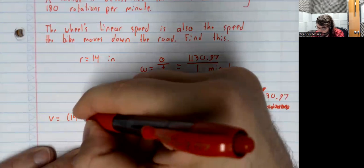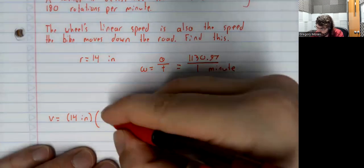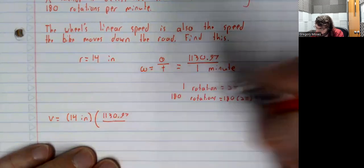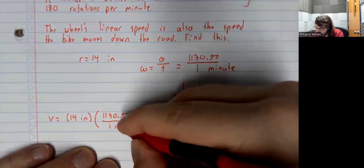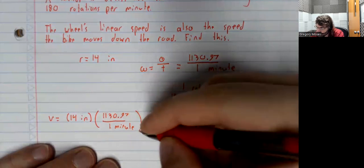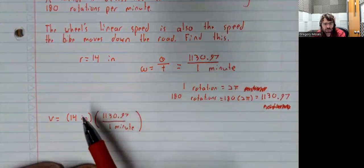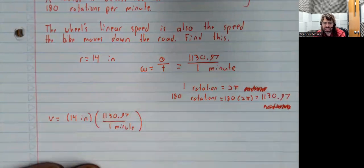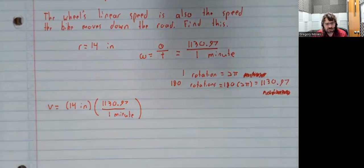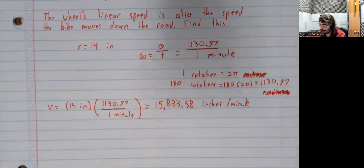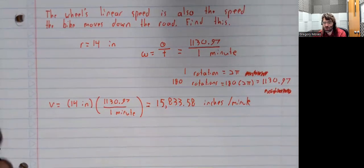And the reason I mentioned that about the units is, you see, when we do this multiplication, we're going to get a unit of speed. We're going to get inches per minute. Whereas if we'd had radians up here, as if it were a unit, we'd have had inches times radians per minute, which would not be correct. I mean, in the sense that inches times radians per minute isn't a unit of speed. So, our bicycle is moving down the road at a speed of 15,833.58 inches per minute.